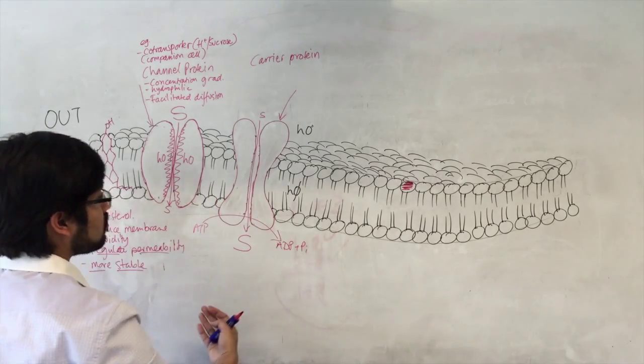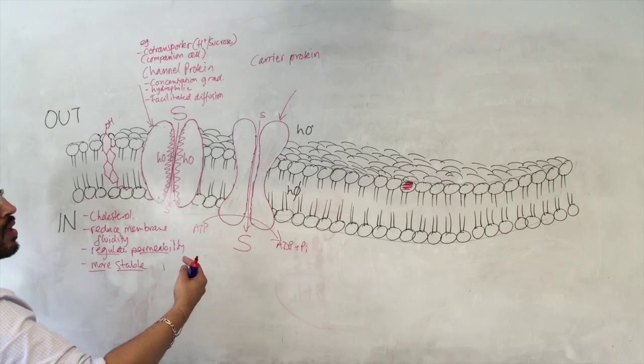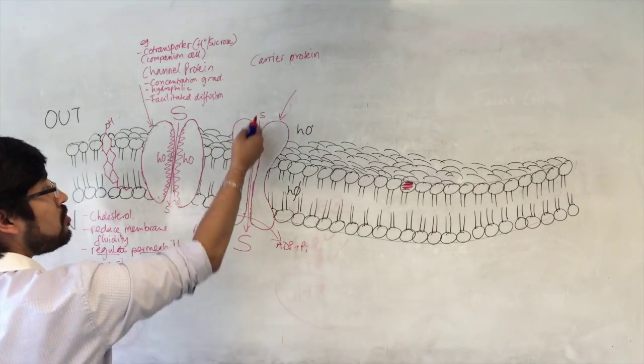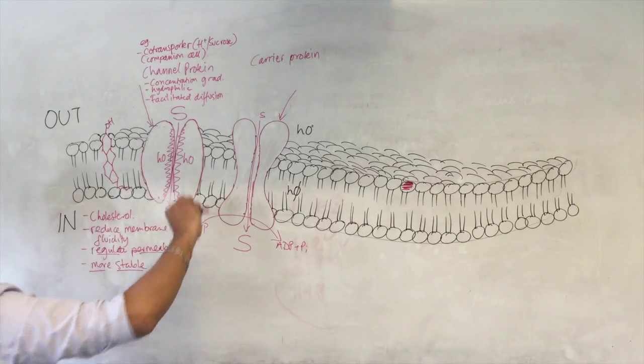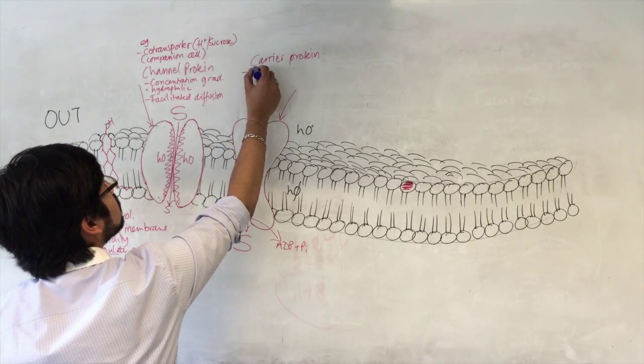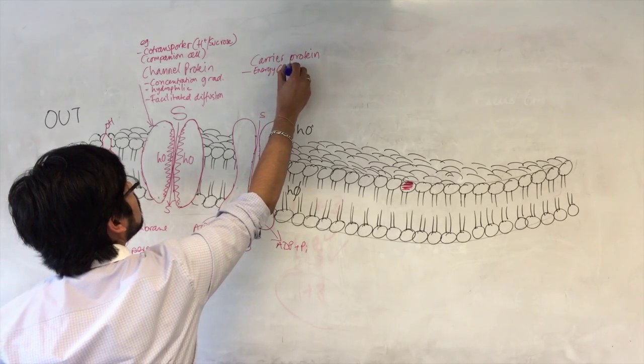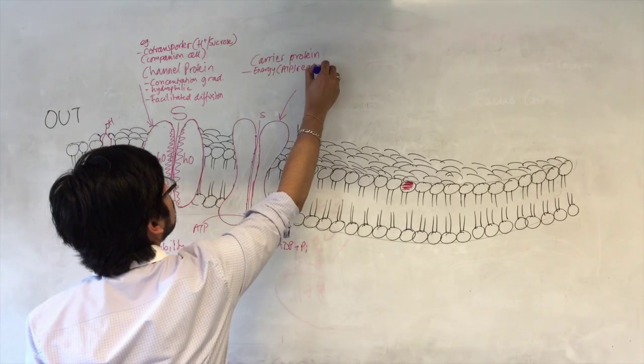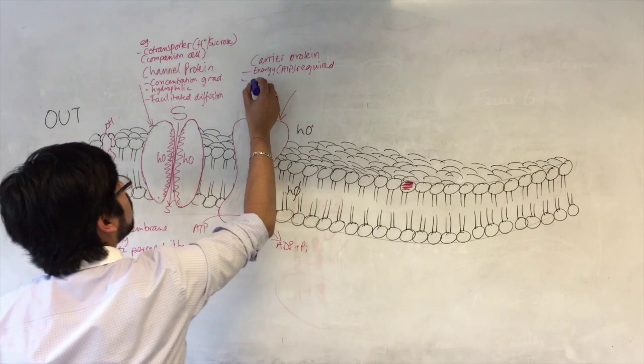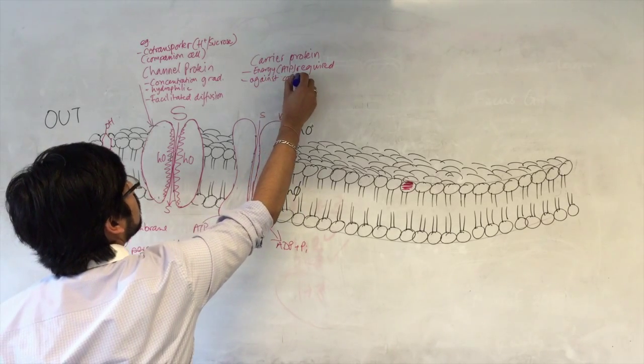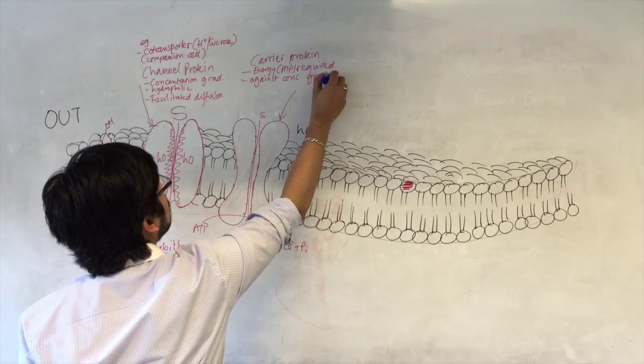This energy is used to transport things. And often, you need energy to transport things in this way because you are moving them against their concentration gradient. Energy ATP required because you are moving things against the concentration gradient.